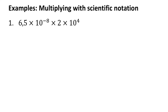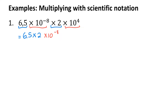The first two examples I'm going to look at involve multiplication. Now multiplication is commutative, meaning you can multiply in any order. So I'm going to rearrange this multiplication expression — I'm going to take the 6.5 and the 2 and multiply those together first. Now 6.5 times 2, or double 6.5, is 13.